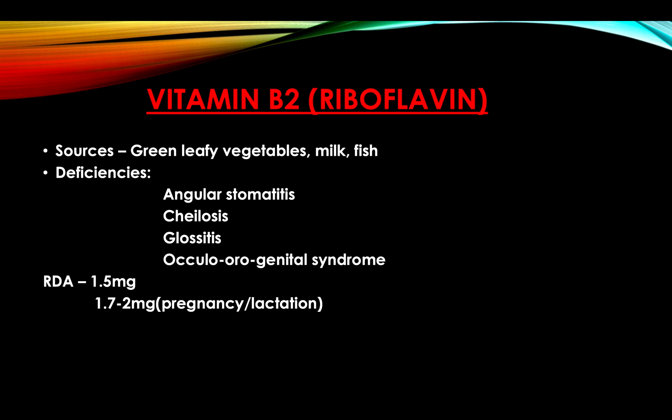Vitamin B2, or riboflavin. Sources include green leafy vegetables, milk, and fish. Deficiency produces angular stomatitis, cheilosis, glossitis, and oculourogenital syndrome. RDA is 1.5 mg in adults, and 1.7 to 2 mg in pregnancy and lactation.